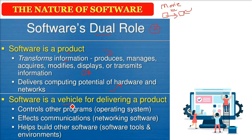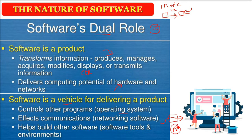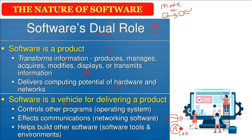The second role: software is a vehicle for delivering a product. Software itself is a product, but it also acts as a vehicle — like a truck — for delivering a product. For example, an operating system. An operating system is a big giant framework that controls other programs, for example Android, iOS, or Windows. So it controls other programs — it's a vehicle that enhances or helps other software to work on it.